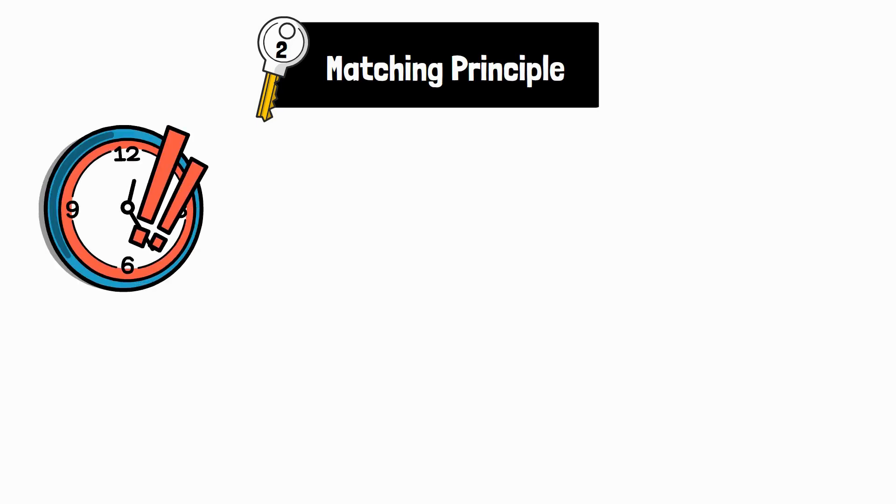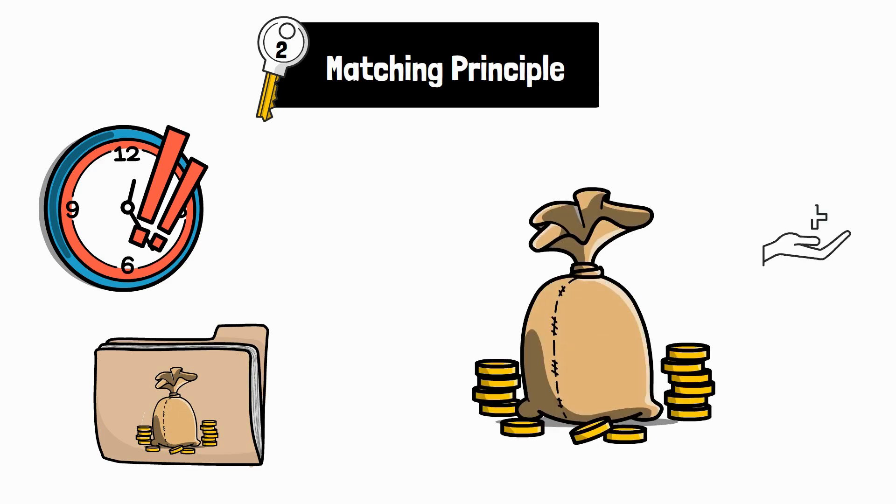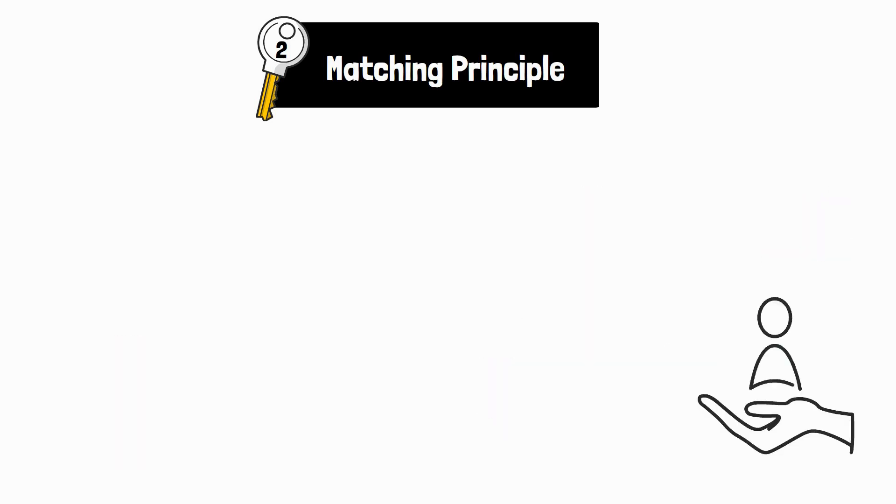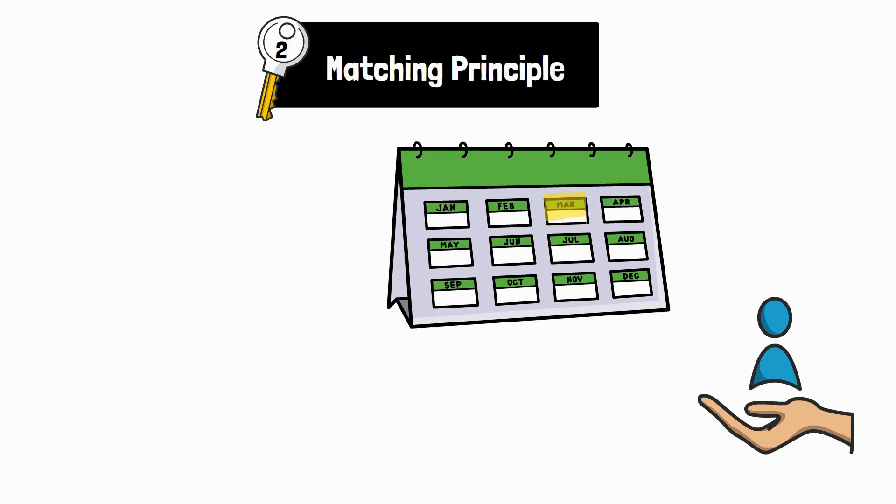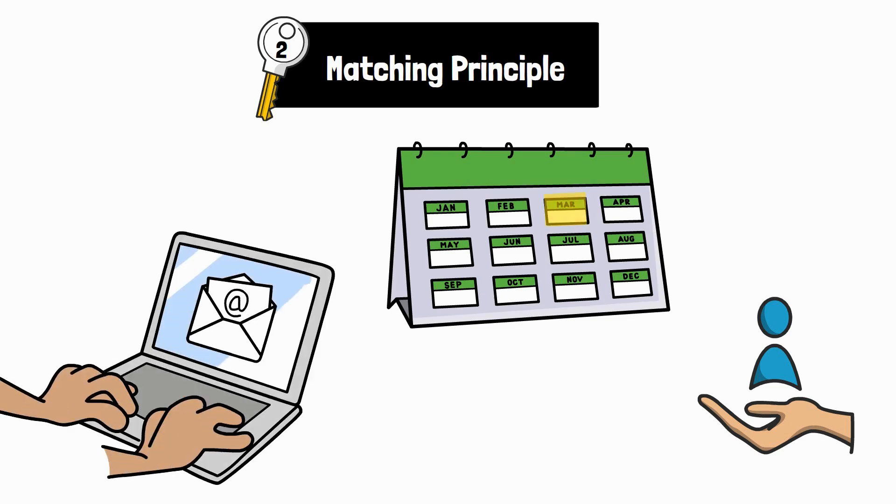Two, matching principle. This is all about timing. Expenses are recorded in the same period as the revenue they helped to generate. So if you hire a contractor in March to complete a project you deliver in April, the expense shows up in April, not March.